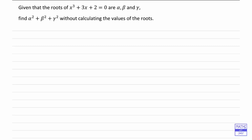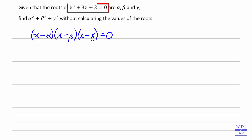So another way of writing the equation, because we know what the roots are, is we could say it must be (x minus alpha) times (x minus beta) times (x minus gamma) is equal to zero. So that's the same as x cubed plus 3x plus 2 is equal to zero.